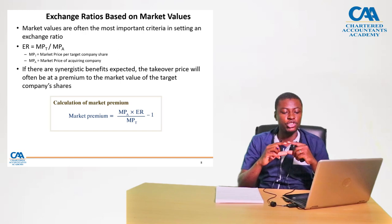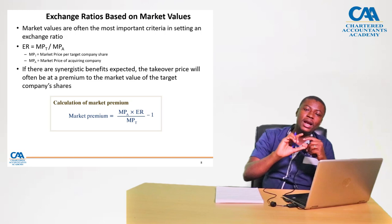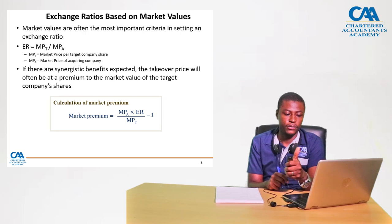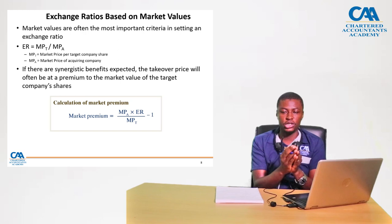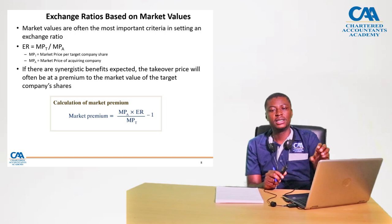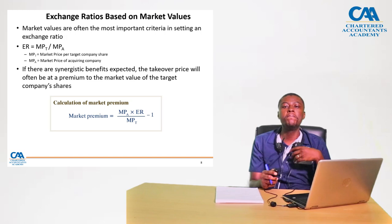In that exchange ratio, how do we adjust for synergistic benefits? If there are any synergistic benefits expected, the takeover price will often be at a premium to the market price. Mathematically, the market premium is calculated as: market price of the acquiring company times the exchange ratio, divided by the market price of the target company, minus one. This market premium can then be added to the exchange ratio.